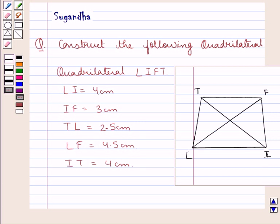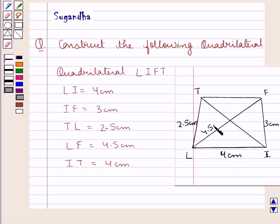Before drawing the actual figure, first let's consider the rough sketch of the quadrilateral LIFT, in which we have LI is given to be 4 cm, FI is 3 cm, TL is 2.5 cm, LF is 4.5 cm, and TI is 4 cm.